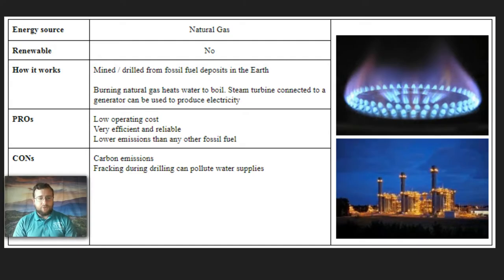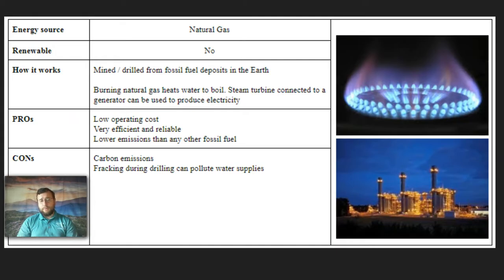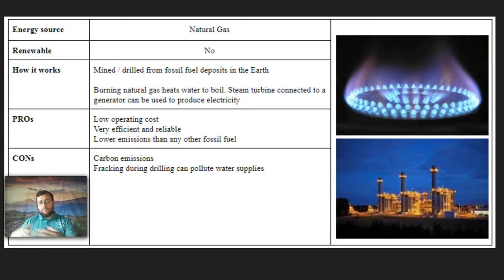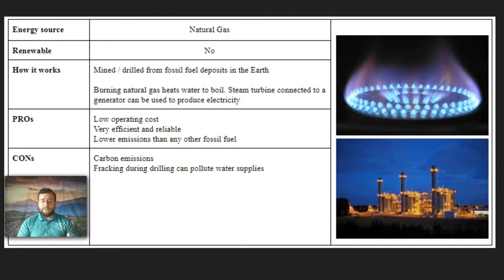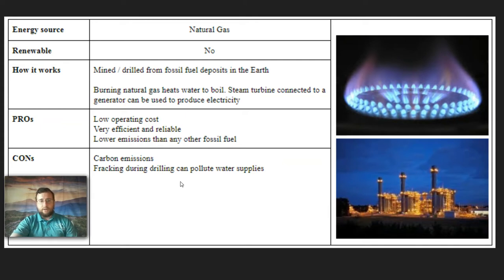The last fossil fuel to mention is natural gas. You can mine it from the ground, usually near petroleum deposits or right above them. You use it to heat homes or to boil water to put through a steam turbine to make electricity through a generator. It's very efficient, very low cost, and much cleaner than the other two types of fossil fuels. So if you must use fossil fuels, natural gas is perhaps the way to go, and a lot of people use it to heat their houses.